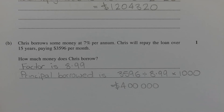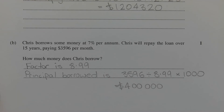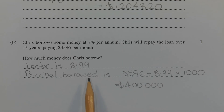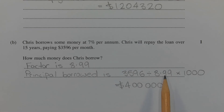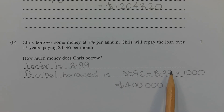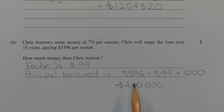Basically what we're doing is reversing the process used in Part A. So the principal, or the amount borrowed, is the monthly repayment divided by the factor we just found: $3,596 divided by 8.99. That gives us how many lots of $1,000 were borrowed, so we multiply by 1,000 to get the actual amount, which is $400,000.